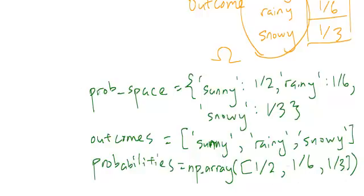But the basic idea is that this here is a different way to also encode the probability space, where the zeroth entry corresponds to the zeroth entry here, so probability of sunny is one half, and so forth.